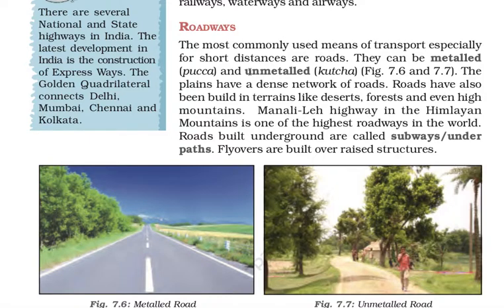Roads can be metalled and unmetalled — pakka roads and kachha roads. The plains have a dense network of roads. Roads have also been built in difficult terrains like deserts, forests, and even high mountains. The Manali-Leh highway in the Himalayan mountains is one of the highest roadways in the world.